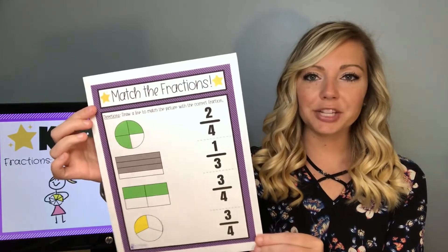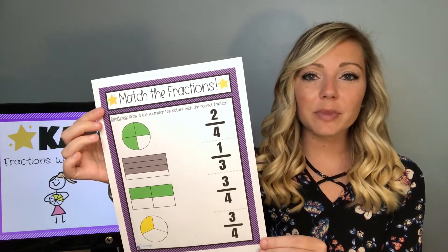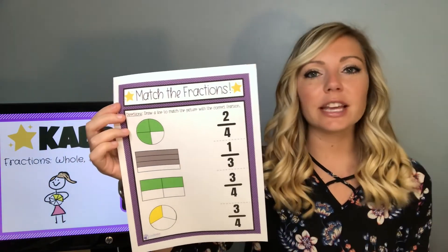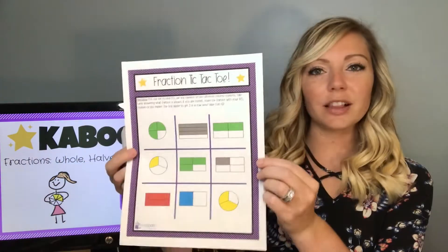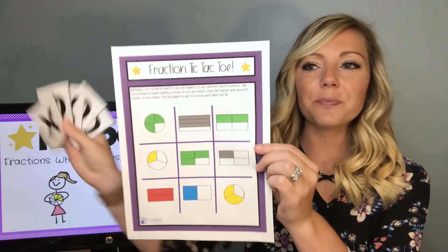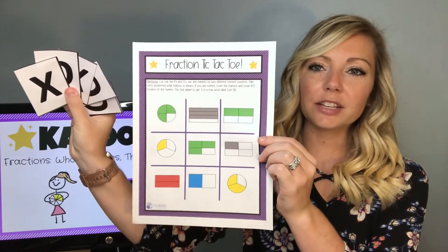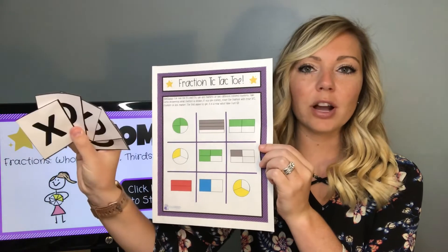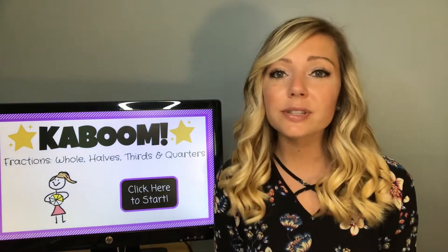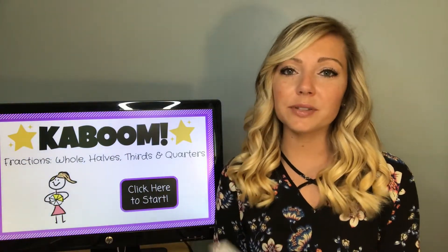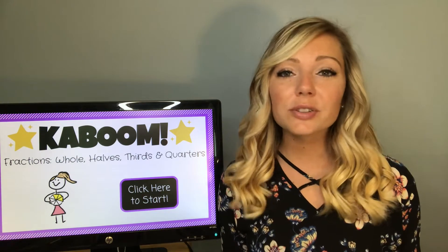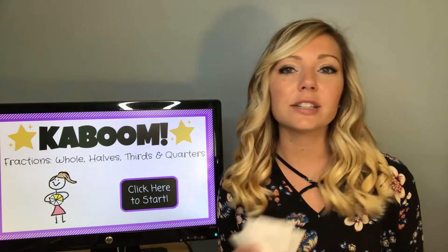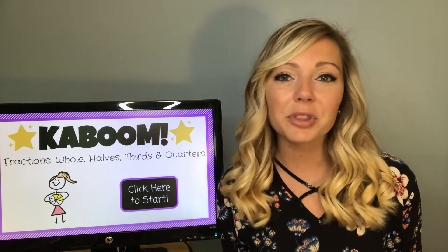Next, I have some matching worksheets and you can put these on your smart board or just have students complete them independently as a packet. Here is a classroom favorite — this is tic-tac-toe. Here are the tic-tac-toe cards, so students will name the fraction and then they can put their X or their O on. It also incorporates social skills since students work to play against each other. You can do this on your smart board too as a whole class activity or have students take turns playing up at the smart board.